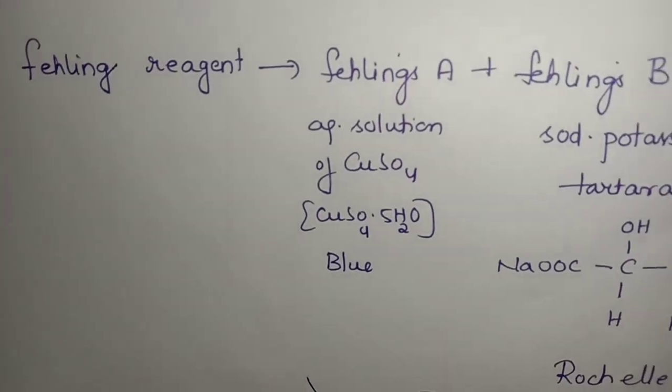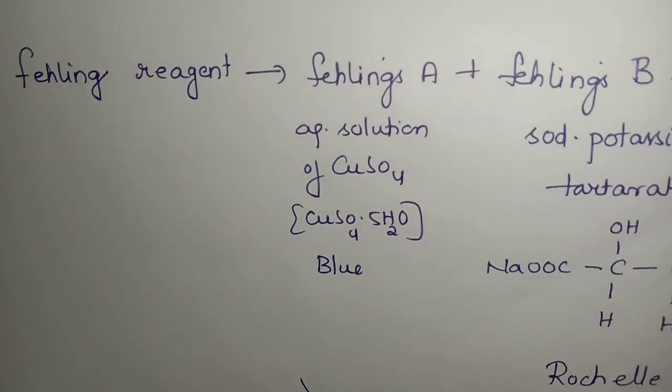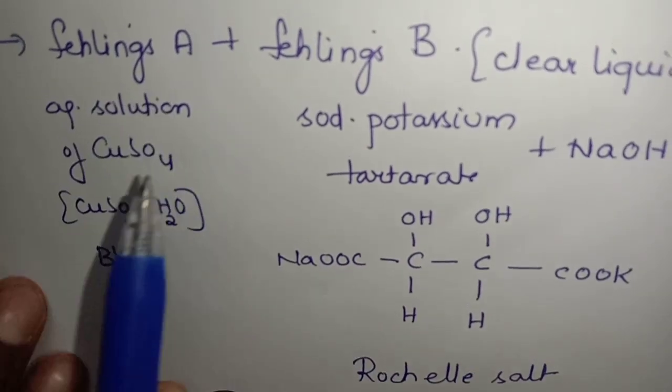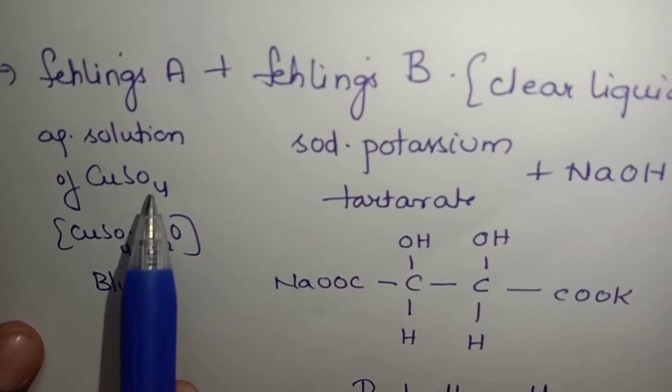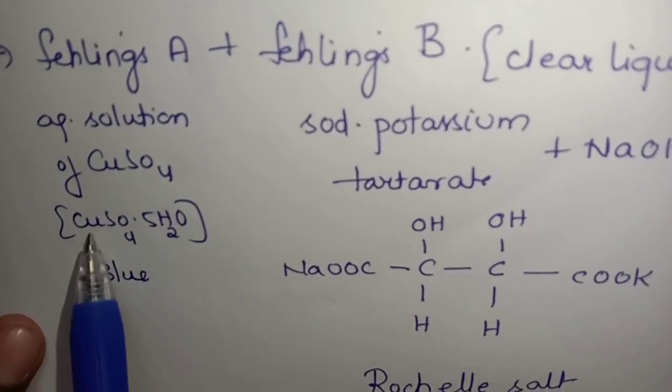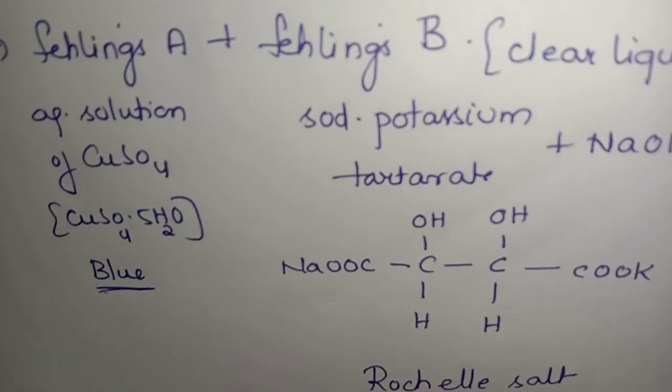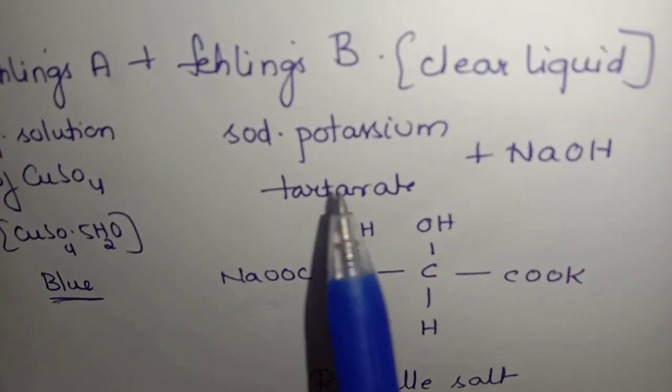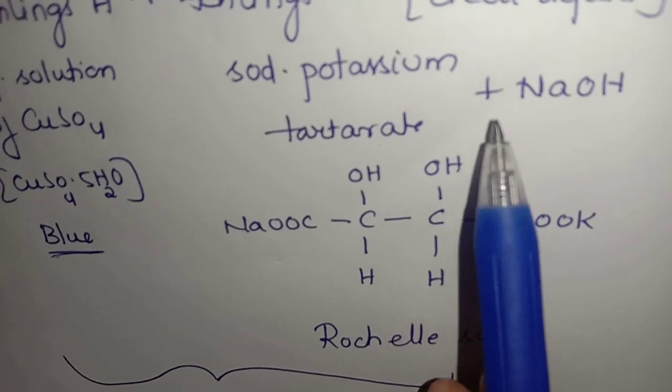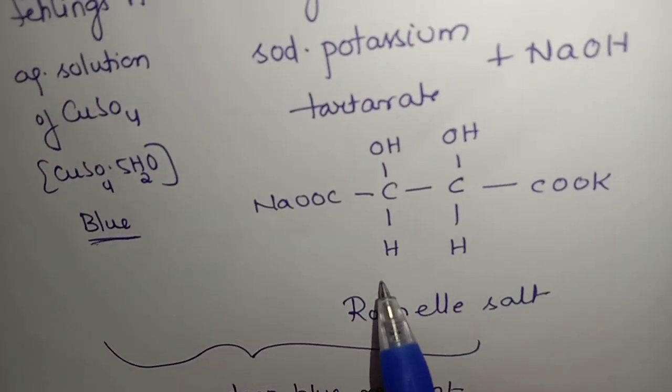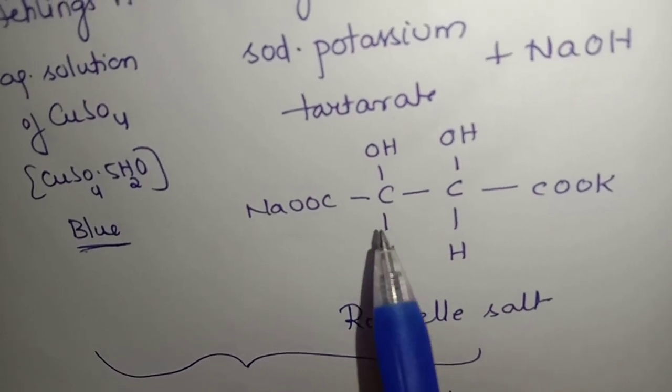Actually what is Fehling's solution? You might be getting a doubt. Fehling's reagent is a mixture of two reagents, Fehling's A and Fehling's B. Fehling's A students, it is copper sulfate pentahydrate, we call it as aqueous solution of CuSO4. CuSO4·5H2O which has blue color. Next, Fehling's B is a clear liquid. It has sodium potassium tartrate plus a strong base, that is NaOH.